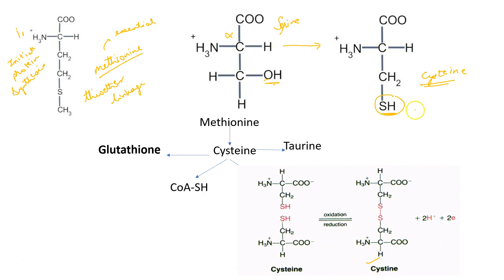The SH group, also called the thiol group, comes from methionine. So methionine is an essential amino acid which is responsible for cysteine biosynthesis, but the entire carbon skeleton of cysteine comes from serine.